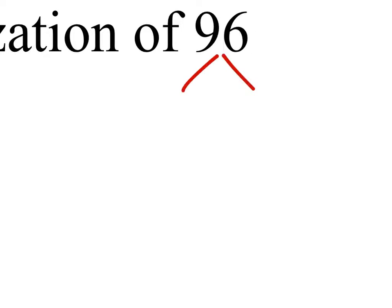So 96, we know it's divisible by 2 because it's even, and 2 is prime. Some of you guys see that it's also divisible by 3, which we'll get to. But if I divide this by 2, I would have to multiply 2 by 48.